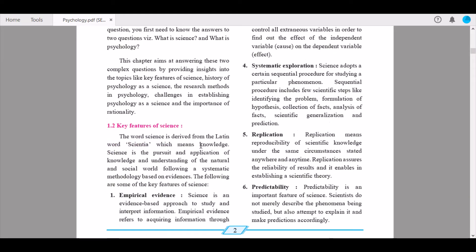We continue to unit 1.2, which provides the key features of science. The word science is derived from the Latin word scientia, which means knowledge. Science is the pursuit and application of knowledge and understanding of the natural and social world following a systematic methodology based on evidence.